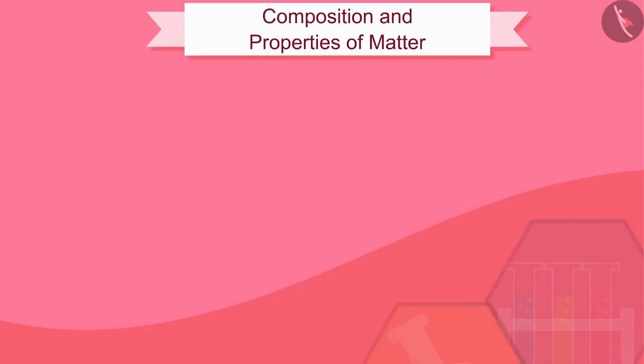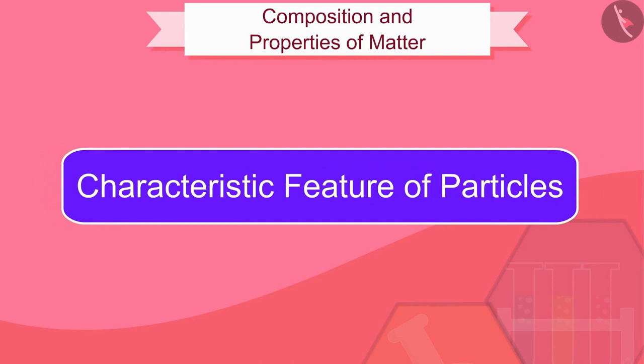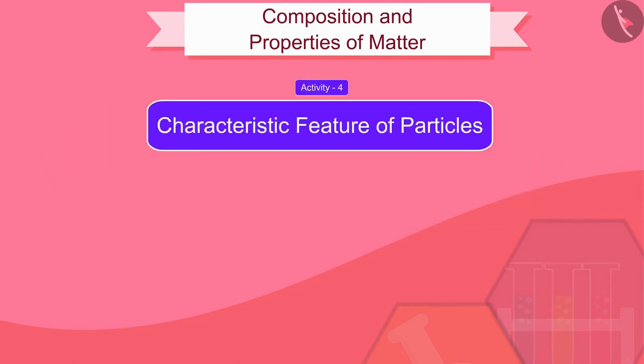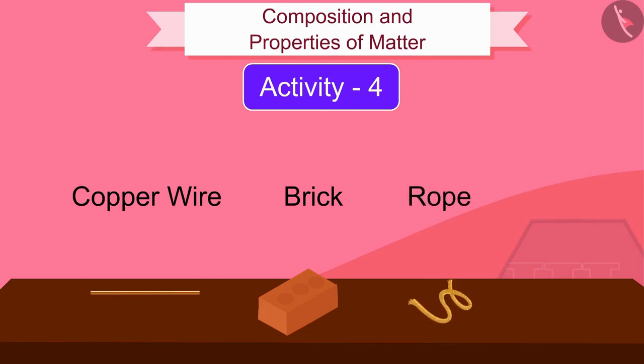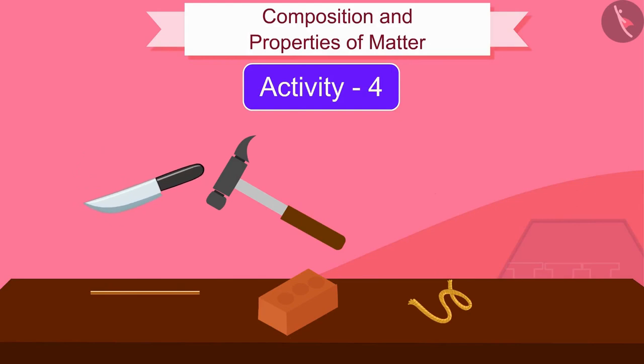Let us now discuss the last characteristic feature of particles. We will also try to understand it through an activity. Take a copper wire, a piece of brick and a rope. Try to make them brittle by hammering, cutting or pulling them.